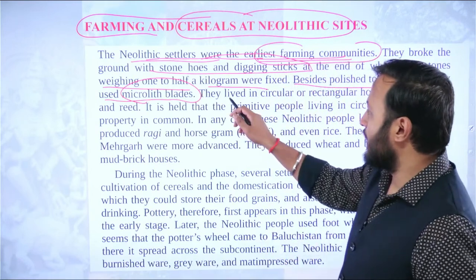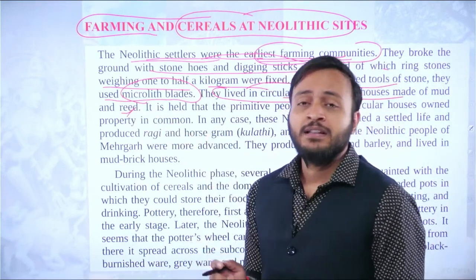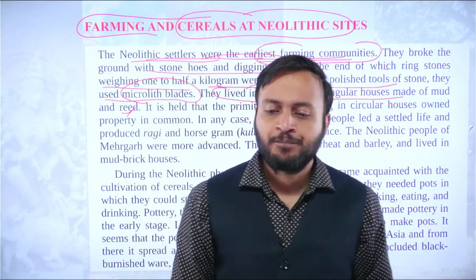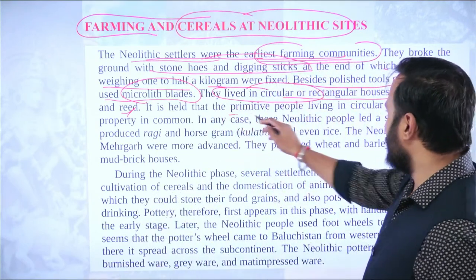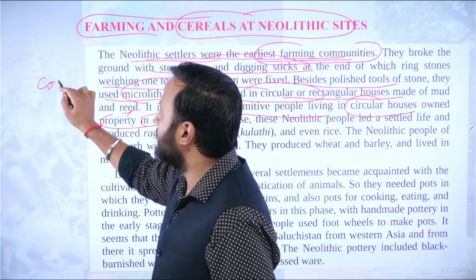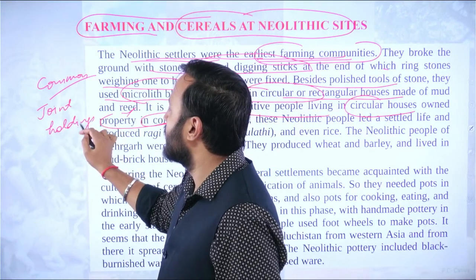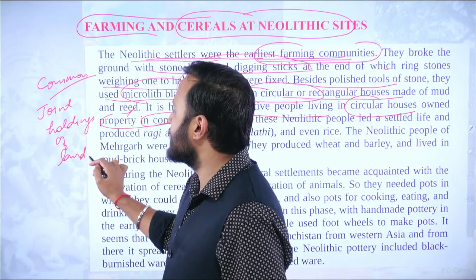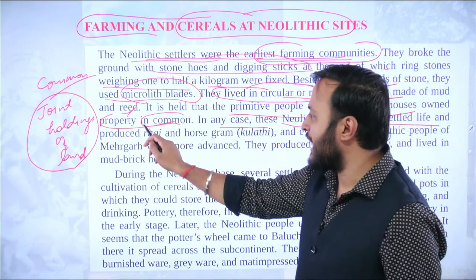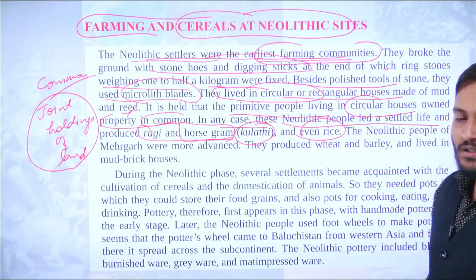The Neolithic people lived in circular or rectangular houses made of mud and reed. The more primitive people lived in circular houses. They owned property in common — that is, joint holdings of land. These Neolithic people led a settled life and produced ragi and kulthi (horse gram). They also produced rice. The Neolithic people of Mehrgarh were more advanced — they produced wheat and barley and lived in mud brick houses.